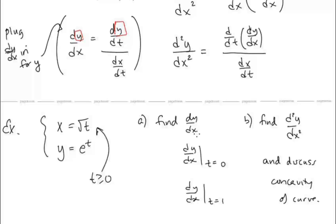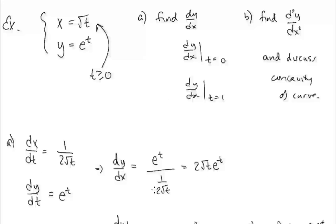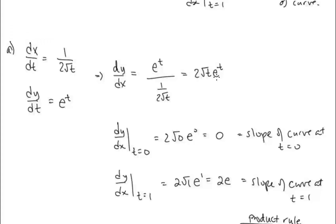To find dy/dx, we need dx/dt and dy/dt. Since x equals t to the one-half power, dx/dt is one-half t to the negative one-half, or 1 over 2 radical t. And dy/dt is just e to the t. So dy/dx equals dy/dt over dx/dt, which simplifies to 2 radical t times e to the t. At t equals 0, that's 2 times radical 0 times e to the 0, which equals 0 — the slope at t equals 0. At t equals 1, we get 2 times radical 1 times e, which is 2e — the slope at t equals 1.